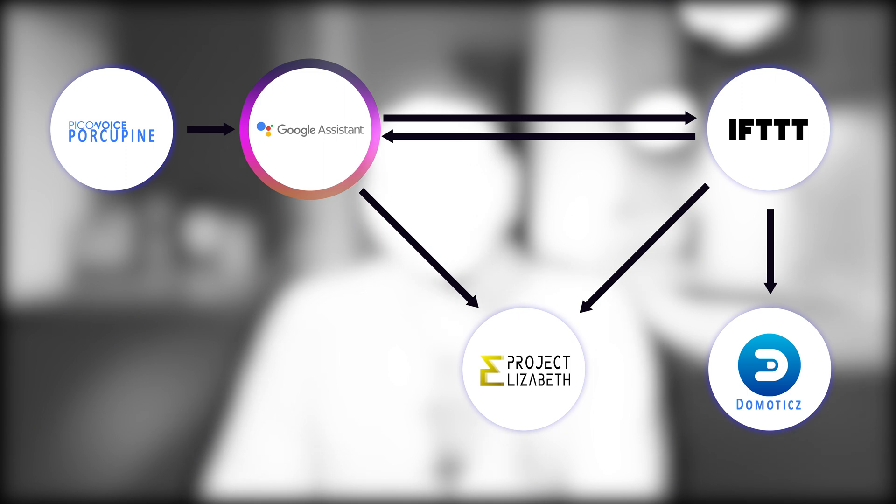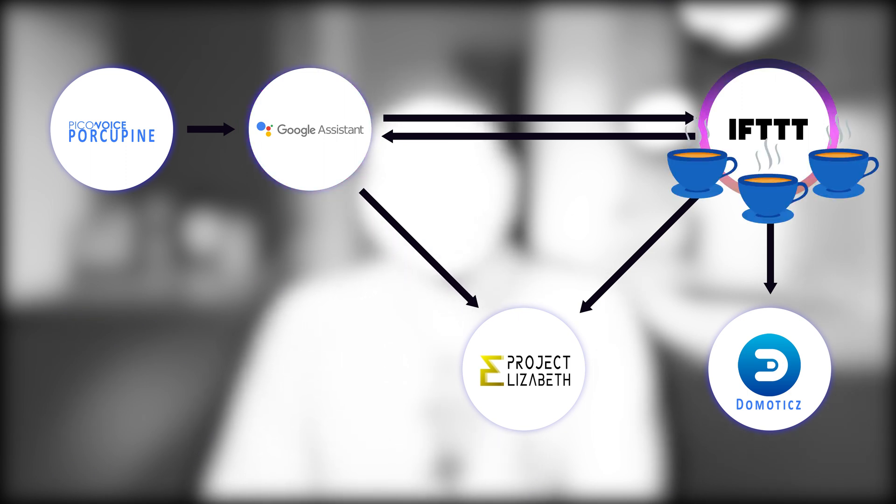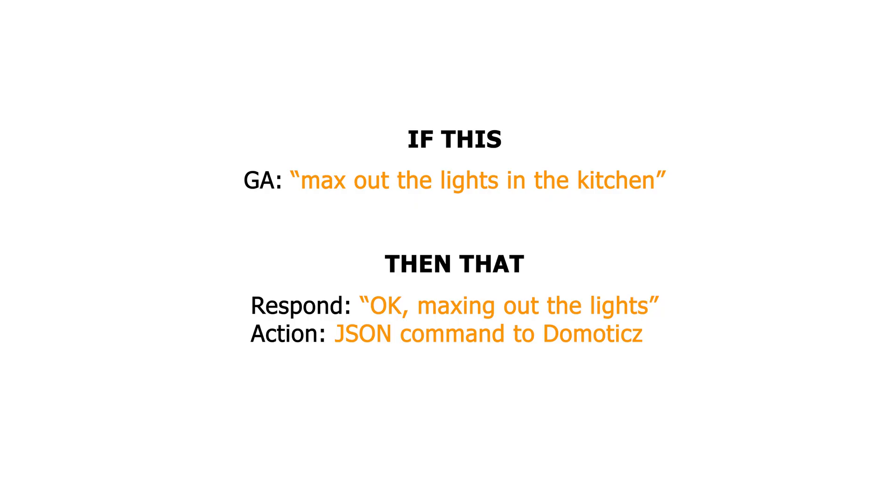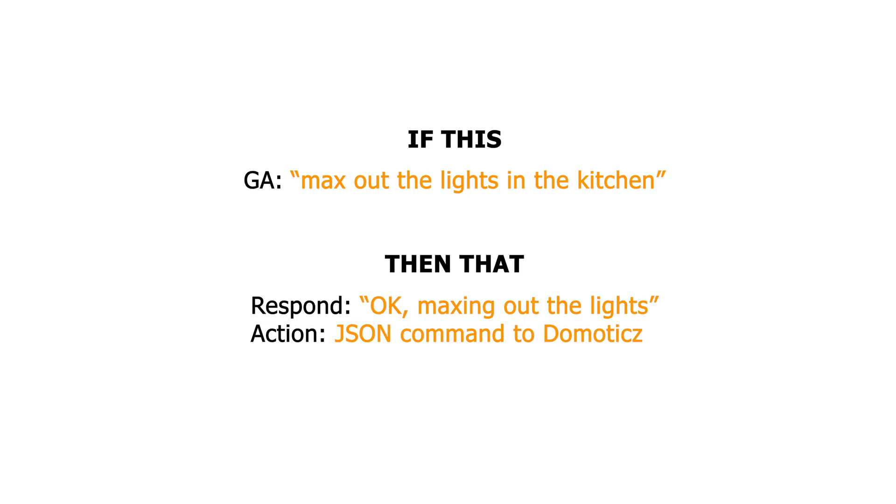With Google Assistant activated, our commands are sent to IFTTT. If there is an applet that can be triggered, it will be. Whatever you've decided to happen will happen. In this case, 'max out the lights in the kitchen' triggers an applet on IFTTT that sends a command for a voice response back to Google Assistant, which also shows up on Project Elizabeth. At the same time, a command is sent from the applet to Domotix for the action itself. There can also be commands going specifically to Project Elizabeth for when a visual response is needed — for example, when changing views. IFTTT is not bound to Google Assistant; there are loads of different service providers connected to IFTTT.